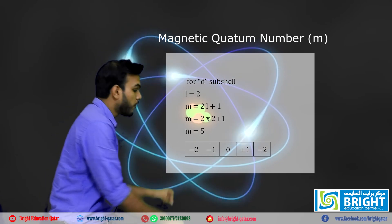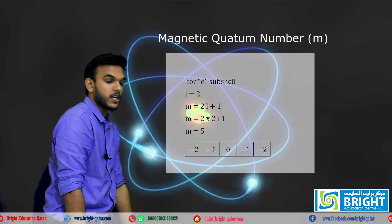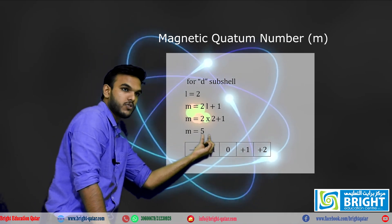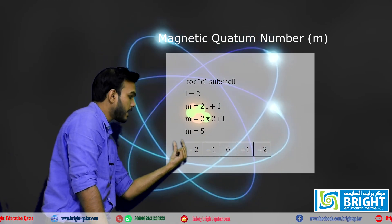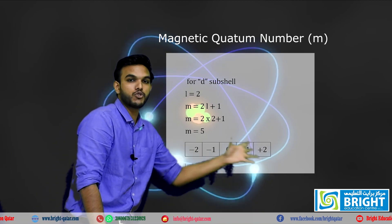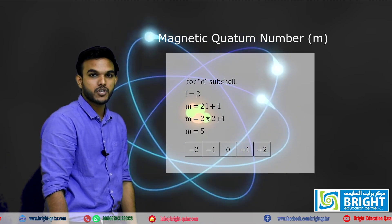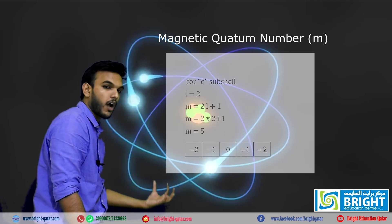Therefore, the d subshell has five orbitals. The values are 0, minus 1, plus 1, minus 2, plus 2. These are the values of the d subshell. You can also find the values of the f subshell as homework.